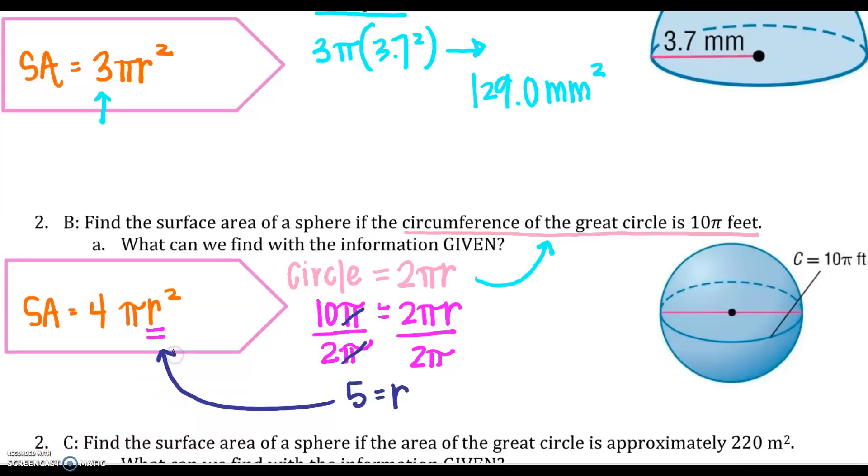Then I'm going to plug that in there for my surface area. So my surface area equals 4π(5²). So I can leave it in... Sorry about that. I could leave it in terms of π or I can just solve. So I could get 100π feet squared, which is approximately 314.2 feet squared.